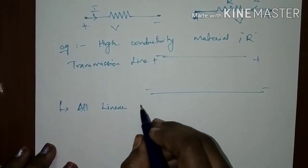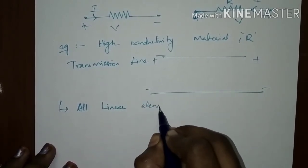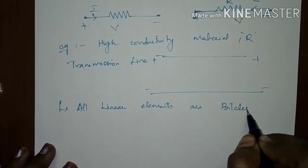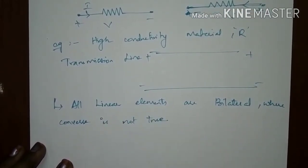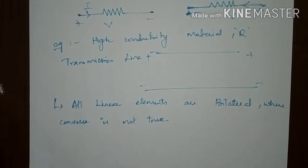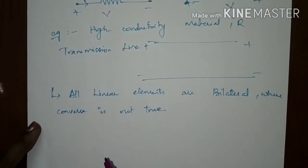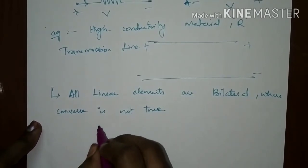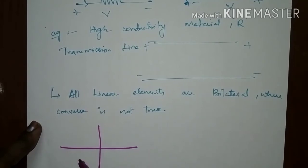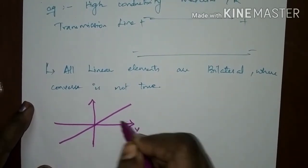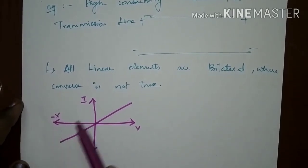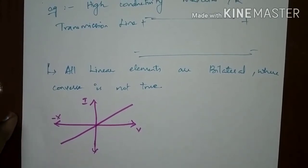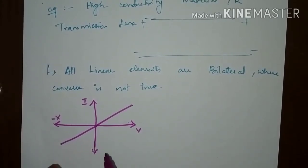We can note that all linear elements are bilateral, but the converse is not true. For a bilateral element, it should have the same property if you reverse the voltage — the same characteristics when voltage polarity is reversed. Resistance has a linearity property even if you reverse the supply. Its VI graph is symmetrical about the axis and passes through the origin, which is the characteristic of a linear as well as a bilateral element.